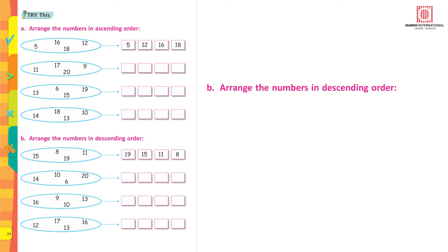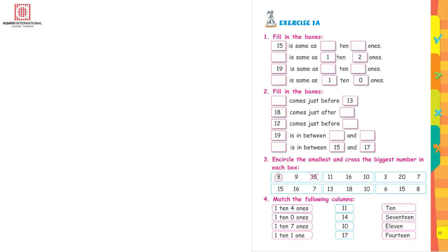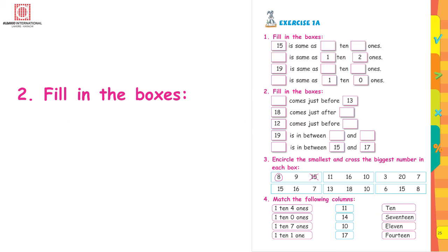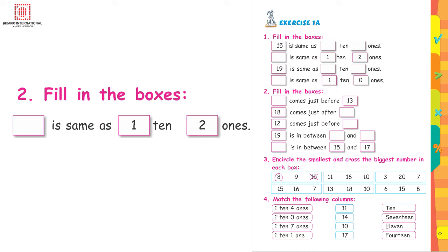I am sure you are going to do the rest of the questions yourselves. Remember, we have already done 1s and 10s. If you have 15 pencils, make a bundle of 10 pencils first. How many pencils are left out of that bundle? 5 pencils. That means you have 1 bundle of 10 pencils and 5 pencils left. So you are going to write: 1 ten and 5 ones. In case of 1 ten and 2 ones, that is 10 plus 2, which equals 12.